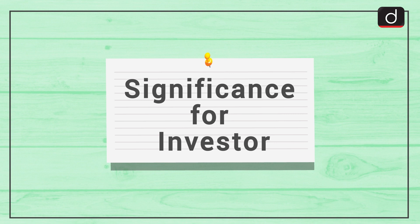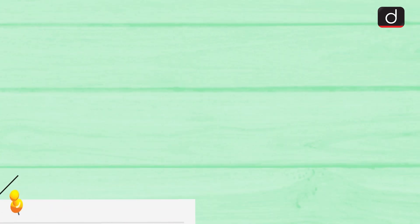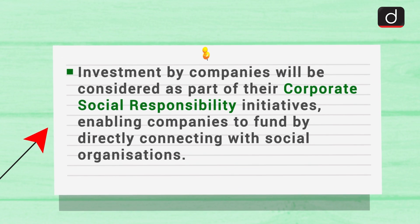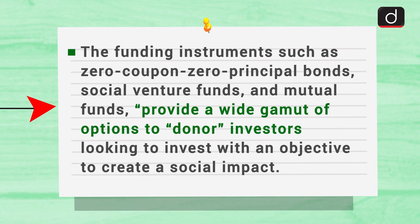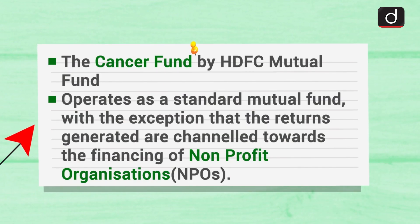Looking at how an SSE helps an investor — investment by companies will be considered as part of their corporate social responsibility initiatives, thereby enabling companies to fund by directly connecting with social organizations. The funding instruments such as zero-coupon, zero-principal bonds, social venture funds, and mutual funds provide a variety of options to donor investors to invest with an objective to create social impact. For instance, the cancer fund by HDFC Mutual Fund is an example of such an exchange — it operates as a standard mutual fund with the exception that the returns generated are channeled towards financing a nonprofit organization.